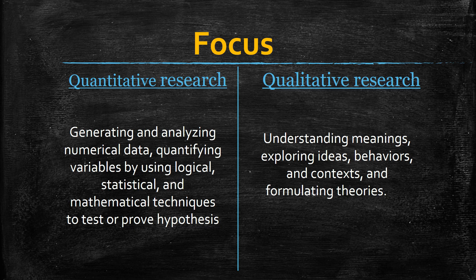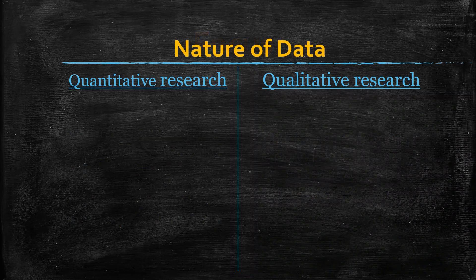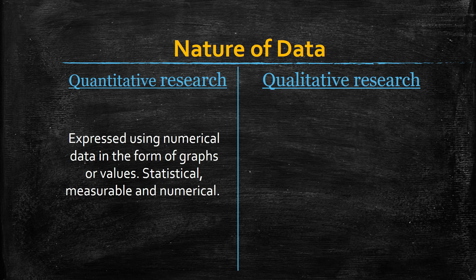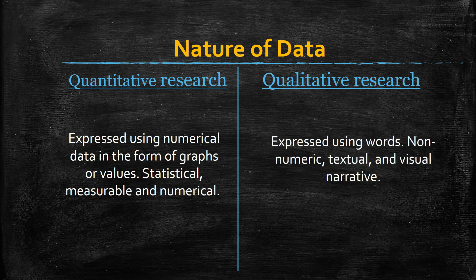The nature of data varies in both methods. In the quantitative method, data is expressed using numerical data in the form of graphs or values — statistical, measurable, and numerical. In the qualitative method, data is expressed using words, non-numeric textual, and visual narrative.